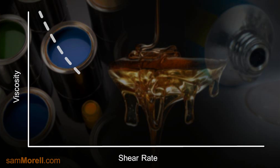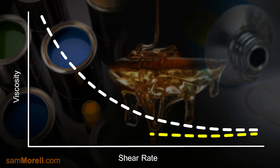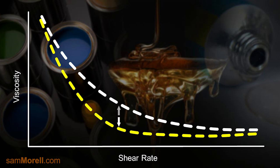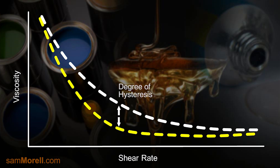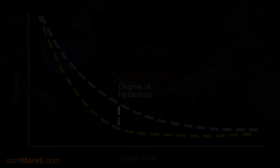With thixotropic fluids, increasing the shear rate will also decrease the viscosity. However, reducing the shear rate will result in a slower path — a longer time to reform the structure and achieve full viscosity recovery. The difference between the downward and upward curves in thixotropic systems is known as the degree of hysteresis. Since products with higher molecular weight particles take longer to recover, their degree of hysteresis will be larger than systems with lower molecular weight particles.